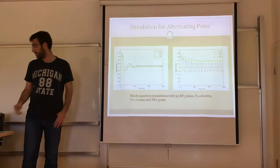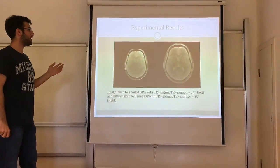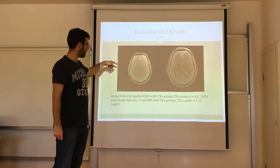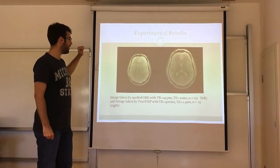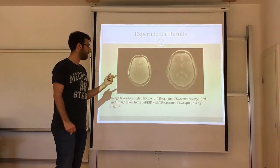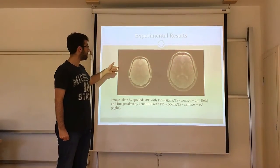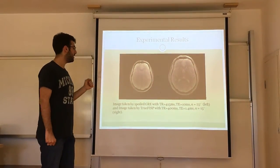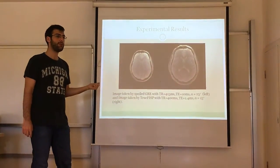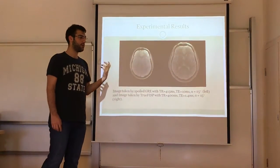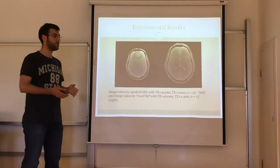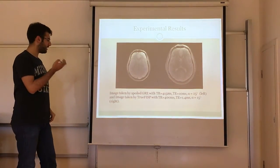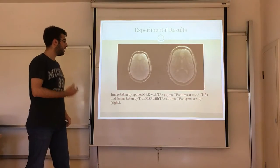I want to show some experimental results. These are two images taken by me at UMRAAM, the National Magnetic Resonance Research Center. The image on the left has TR 450 ms, TE 10 ms, and flip angle 25 degrees, taken with a spoiled GRE sequence. On the right is an image taken with True FISP — I used True FISP because at UMRAAM we couldn't access the FISP or GRASS sequence, so we used the closest relevant sequence to GRASS.